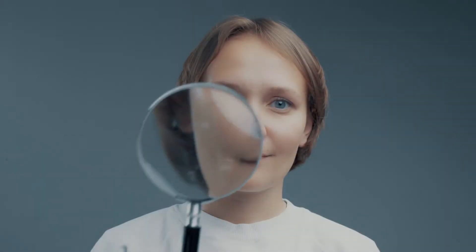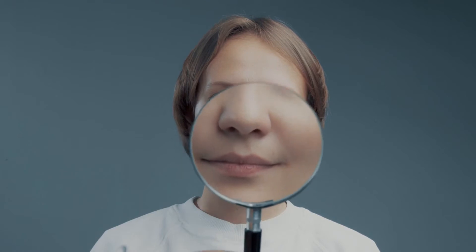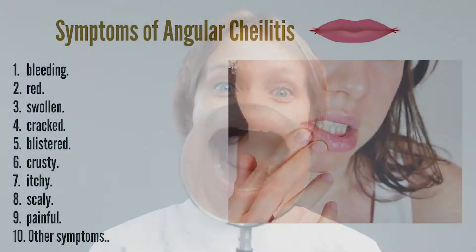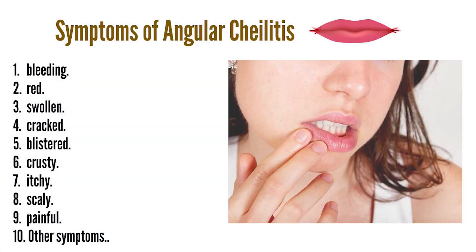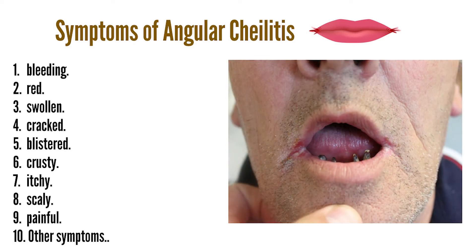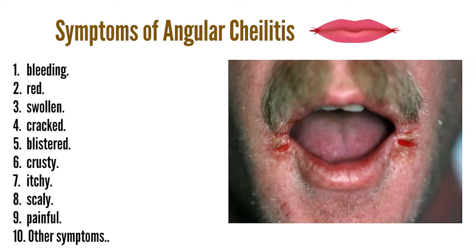Symptoms of angular cheilitis. If you're experiencing angular cheilitis, the corners of your mouth may be bleeding, red, swollen, cracked, blistered, crusty, itchy, scaly, or painful.